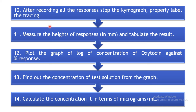After the DRC of the standard is recorded, record the response of a certain volume of the test solution. While selecting the volume of the test solution, ensure that the height of the response due to the test lies within the linear portion of the standard dose-response heights. After recording all responses, stop the chymograph, label the tracings, measure the heights in mm, and tabulate the results in the observation table.